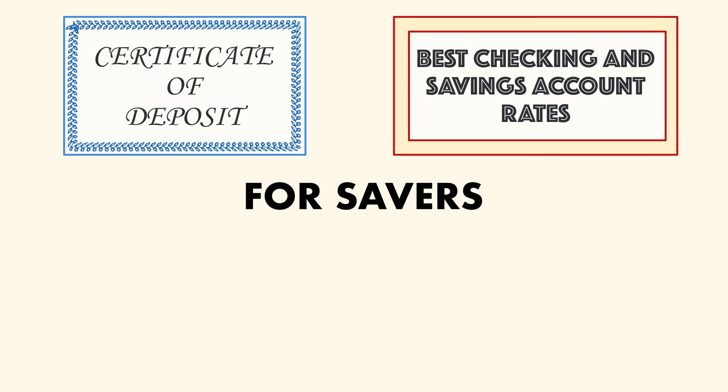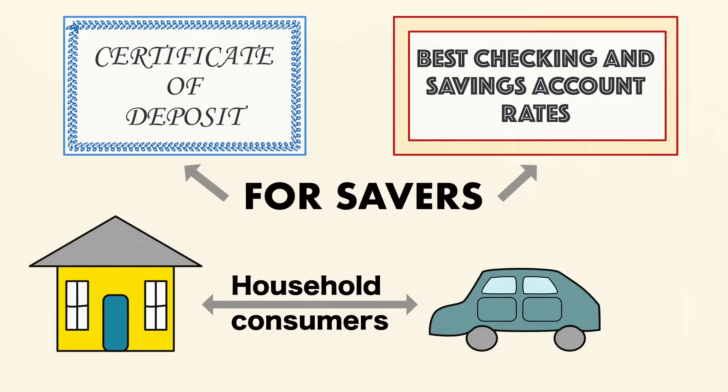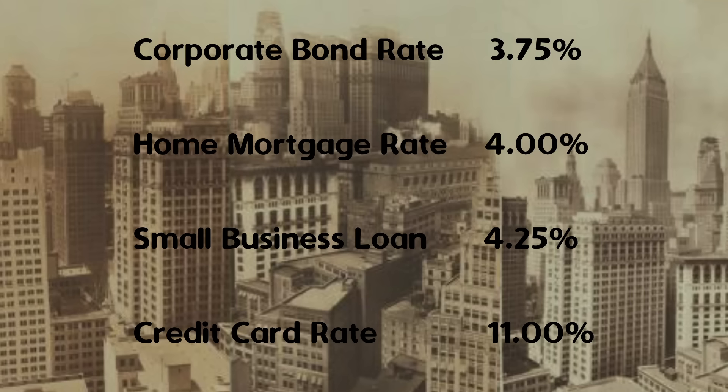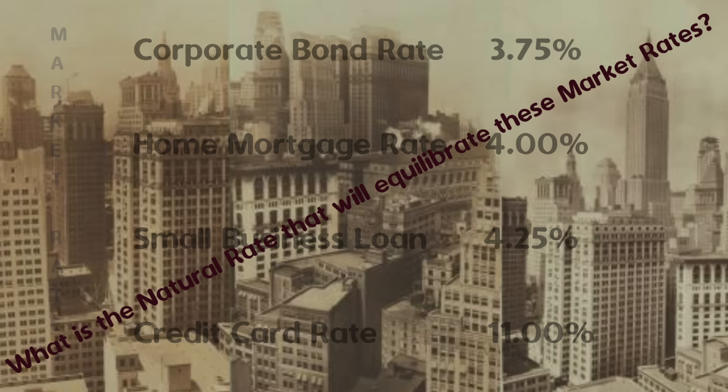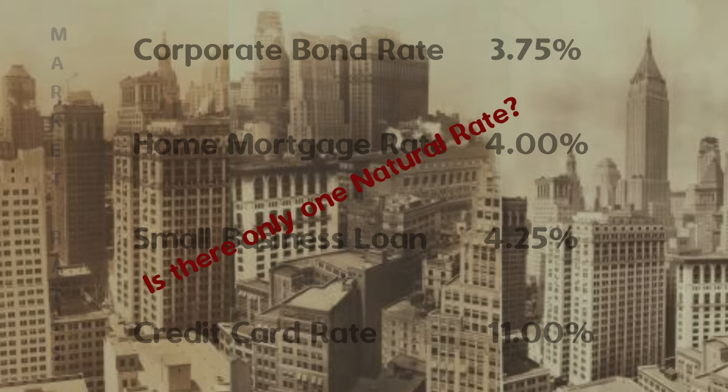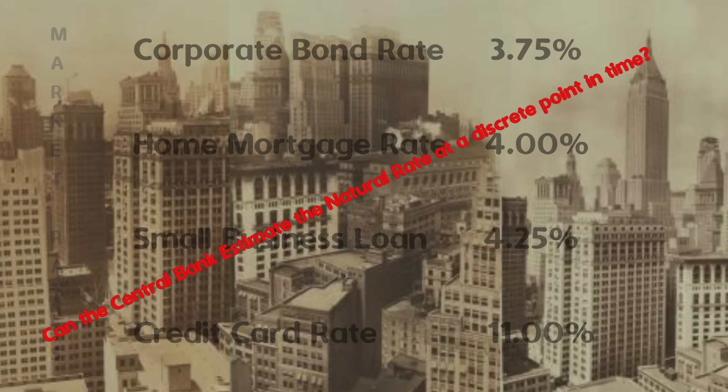On the other hand, for investors, you may see small business loans, business loans for the expansion of your business. This observable rate you see at the bank is what is known as the market rate of interest. You can actually go to the bank and take out a loan, and they give you a rate of interest. What can this be compared to? How do we know if this interest rate is high or low? We're going to be talking about something called the natural rate of interest — the natural rate of interest compared to the market rate of interest.